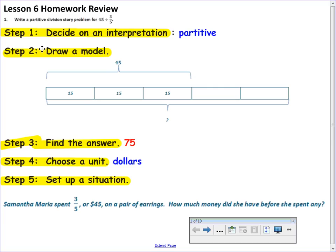So, step 1. Step 1 was written right on your homework. It told you it was partitive division, and I wrote that on the board. So, step 1, you just had to copy out of your binder. Step 2, draw a model. So, 45 divided by 3 fifths.